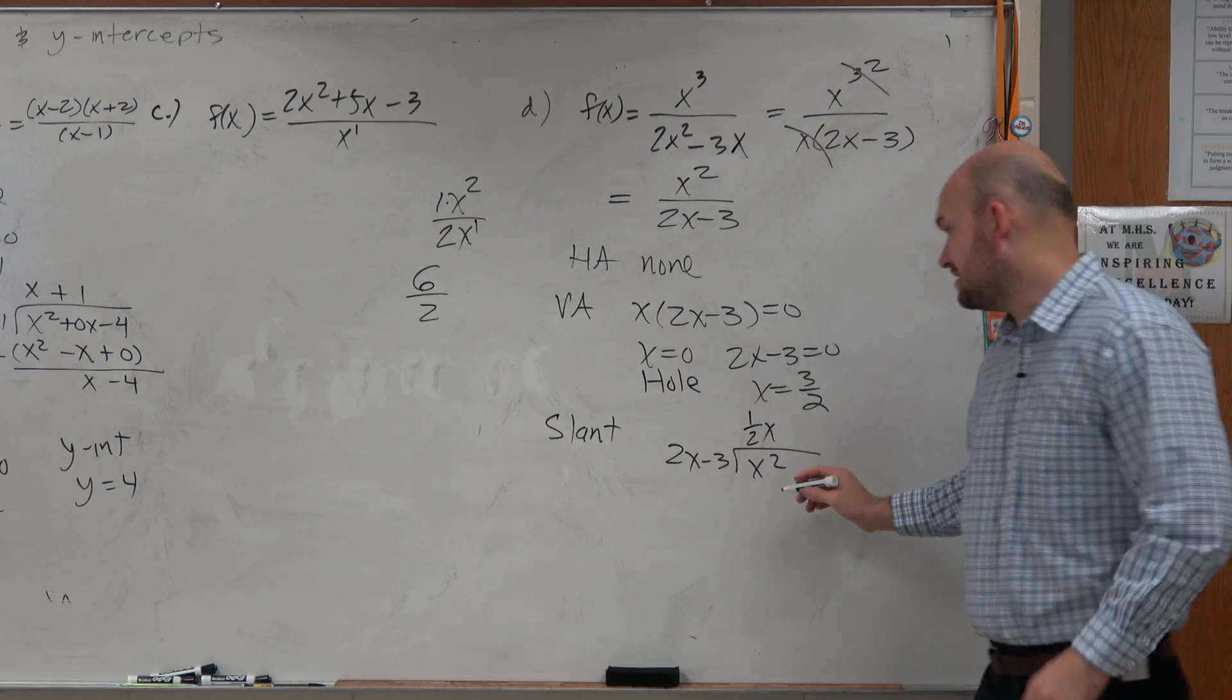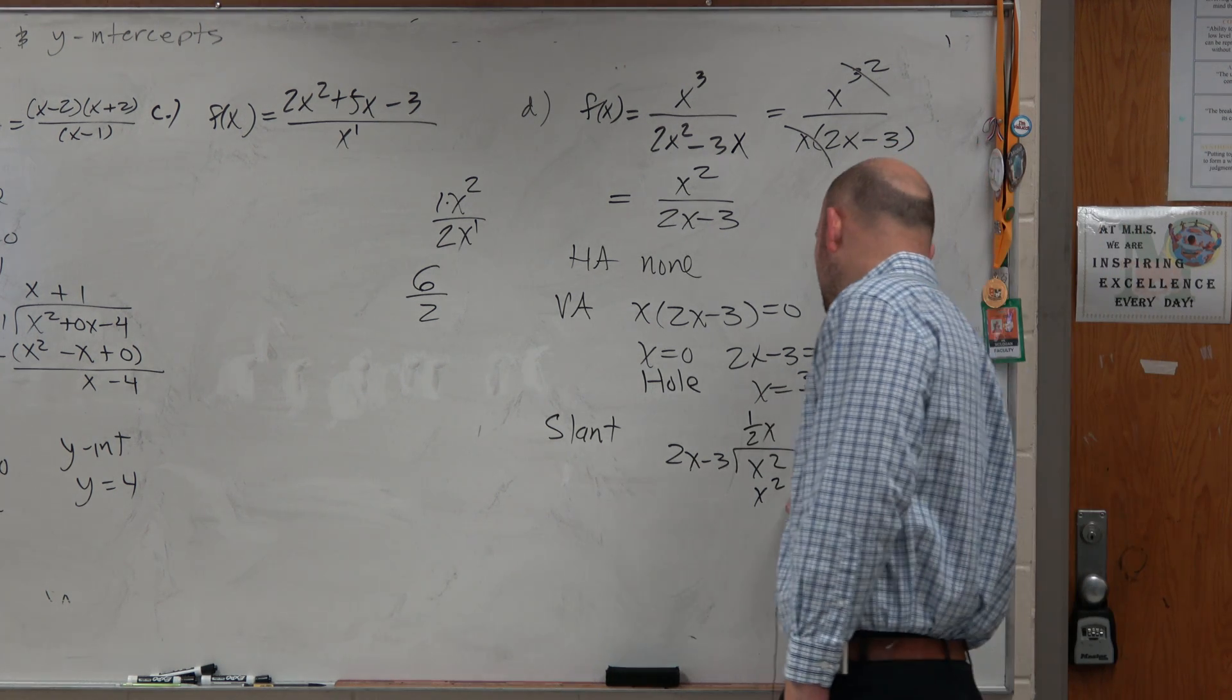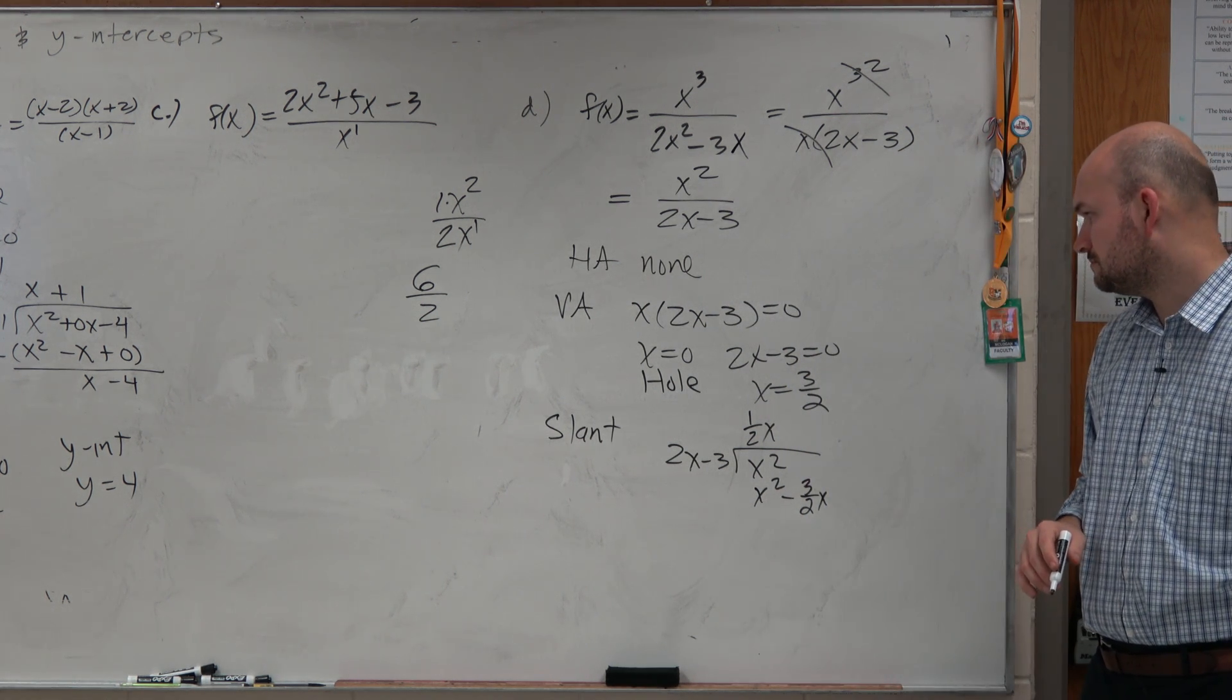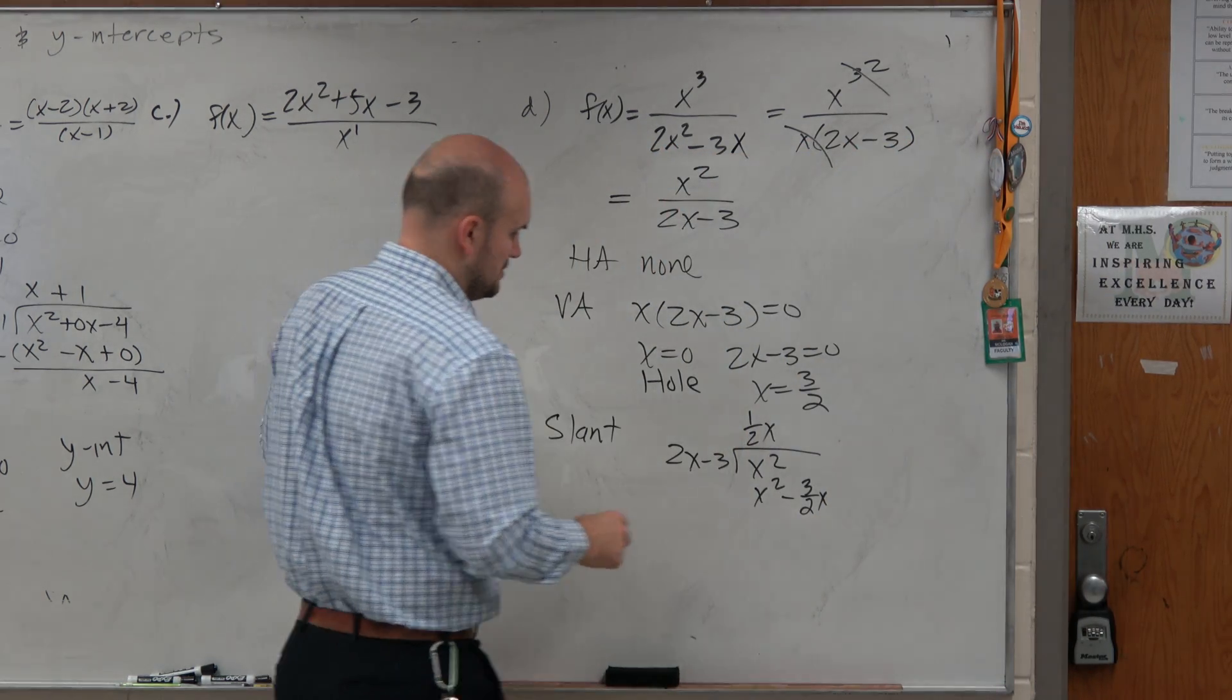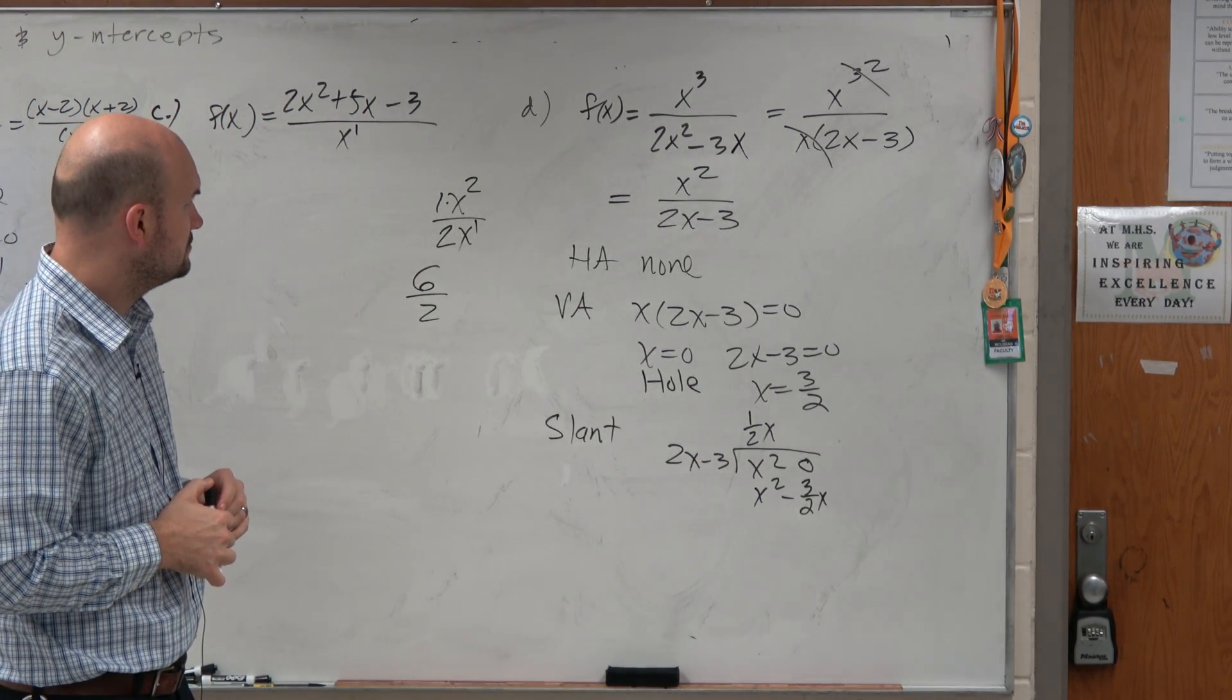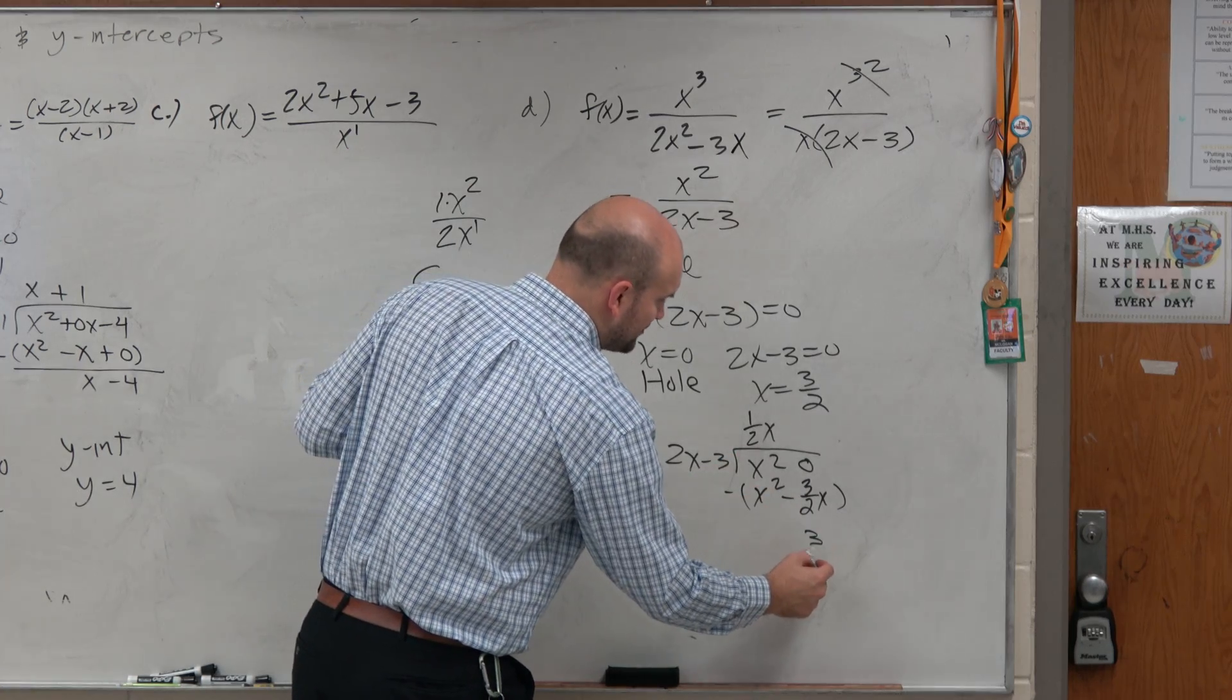Now, 1 half x times 2x, again, is going to 1 half times 2 is 1, x times x is x squared. 1 half x times a negative 3 is going to be a negative 3 halves x. And then, let's subtract the rows. So this becomes a 3 halves x.